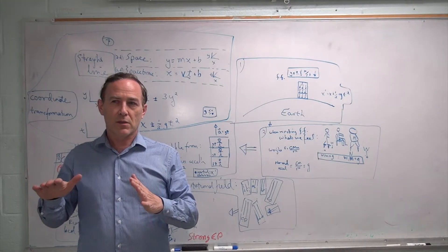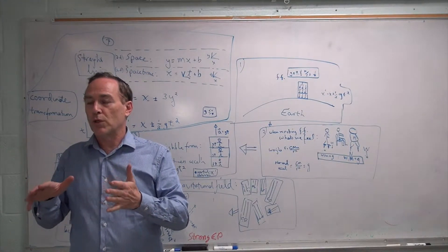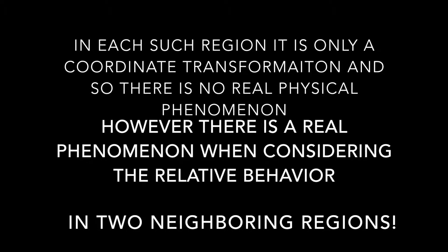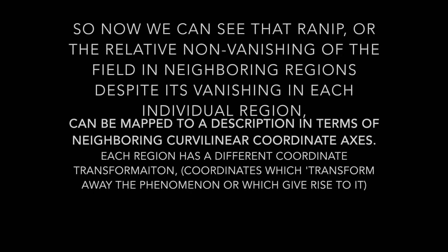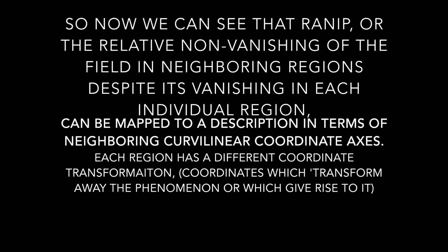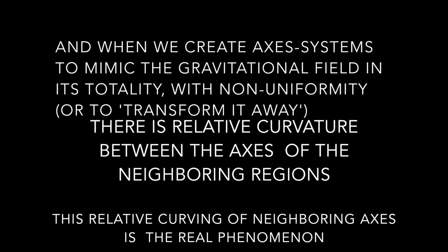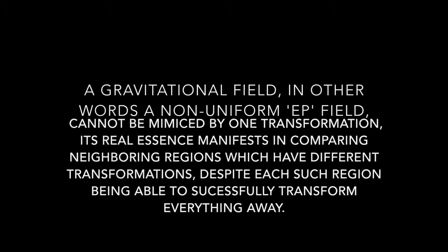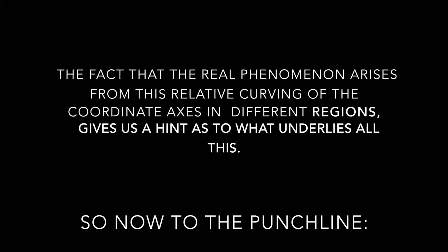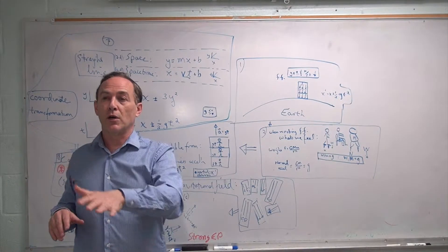So now, what does that give us? What is a collection of regions in each of which there is a curvilinear coordinate transformation? The answer turns out to be — maybe not surprising at this point — curvature: curvature of a surface.